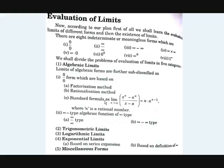The standard formulae method uses formulas like: limit x tends to a of (x^n minus a^n) divided by (x minus a) equals n times a^(n-1). The second type of algebraic limits is the infinity type — in the form of infinity/infinity or infinity minus infinity. We will also solve these, and there are some methods for them.